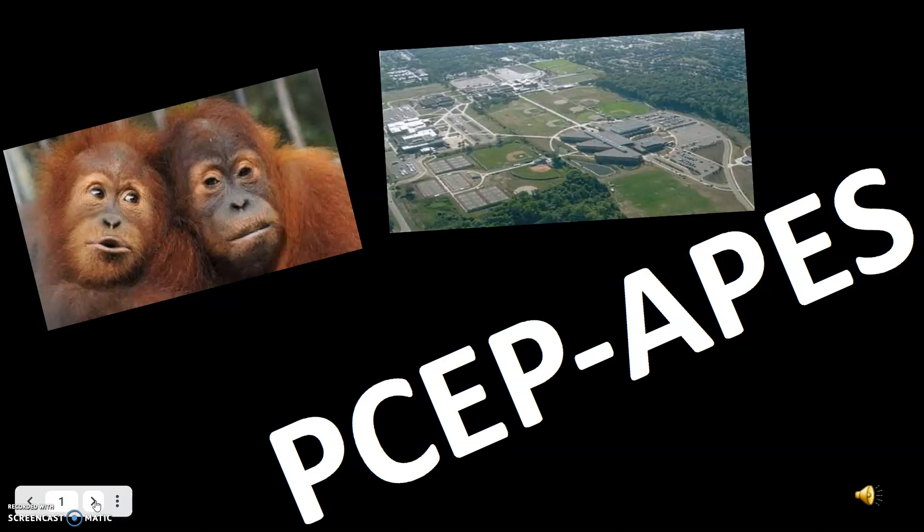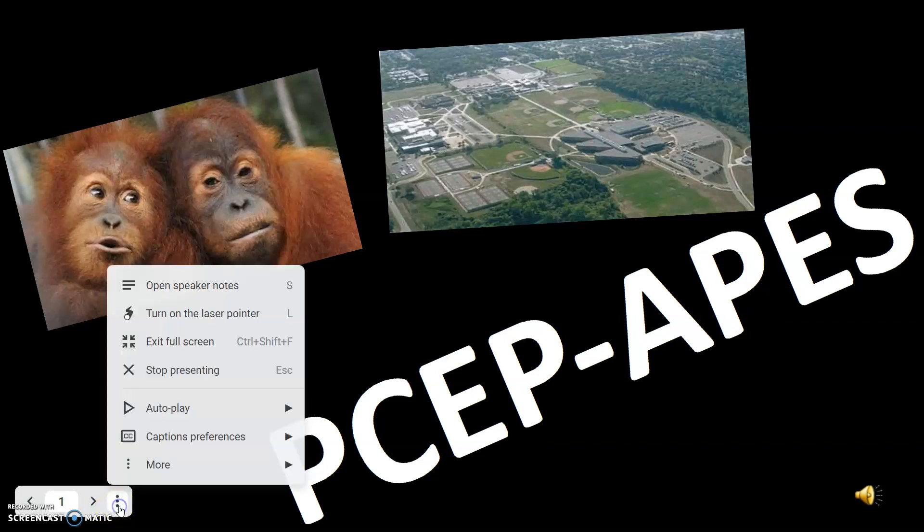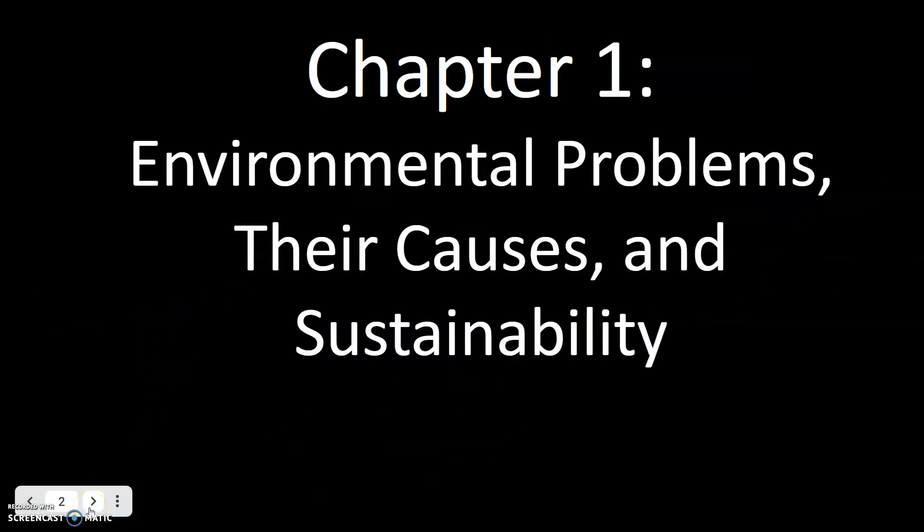Welcome to AP Environmental Science. This is the first screencast for this class, covering chapter one and chapter two as well. The first chapter is environmental problems, their causes, and sustainability. These first couple of chapters are more general, but we will hit on some main terms as we go through.